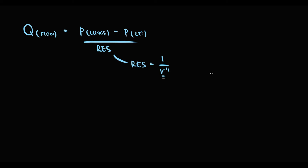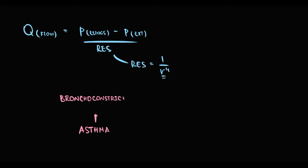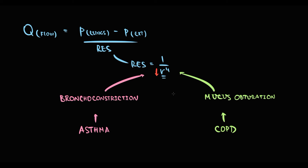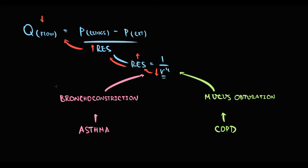Some conditions can decrease the airflow. For example, in exacerbation of asthma or COPD, the radius of the airways decreases. In asthma the causative factor is bronchoconstriction; in COPD it is formation of mucus that obstructs the airways. But in both conditions the radius of the airways decreases. With decreasing radius, resistance increases, and with increasing resistance, airflow decreases. So in patients with exacerbation of asthma, airflow is significantly lower, and during the first second they cannot exhale 80% of air.